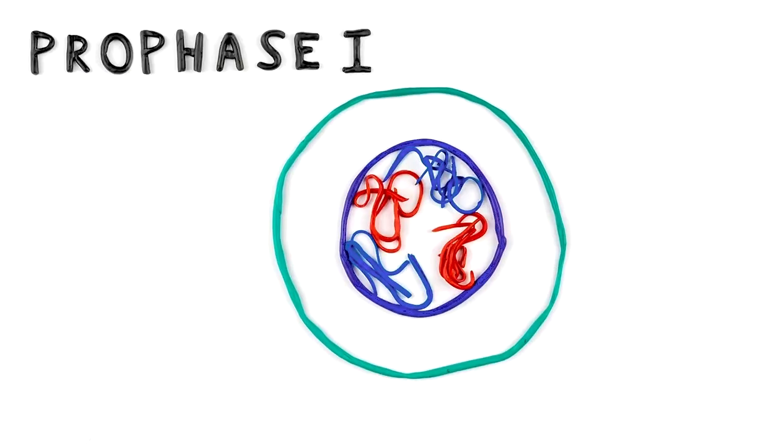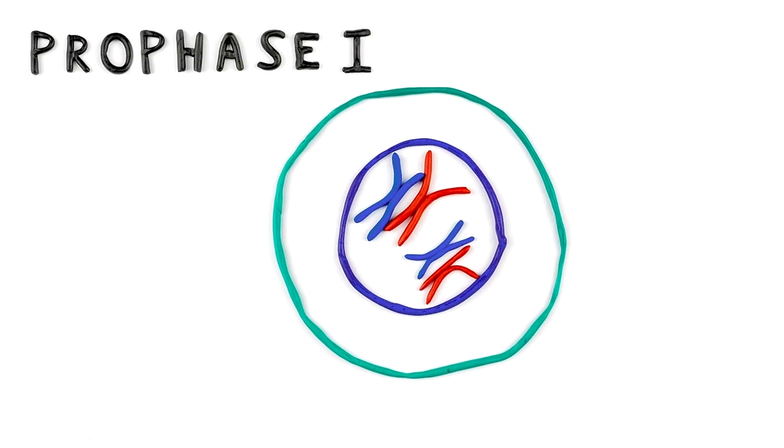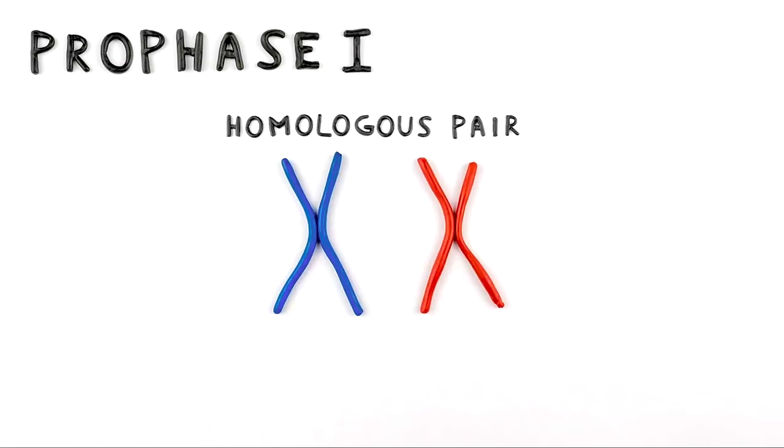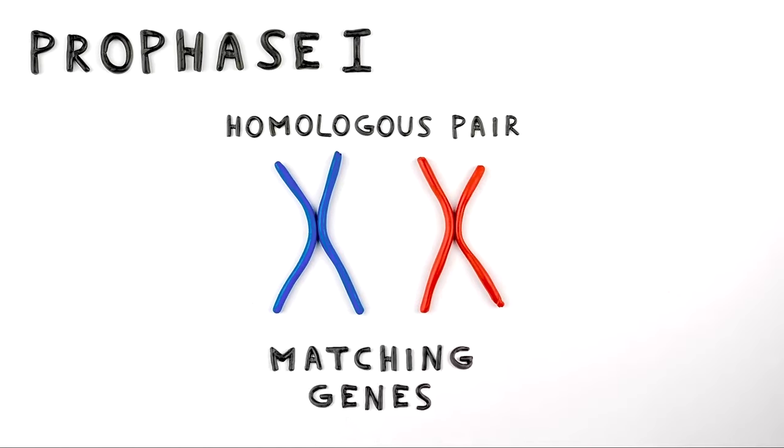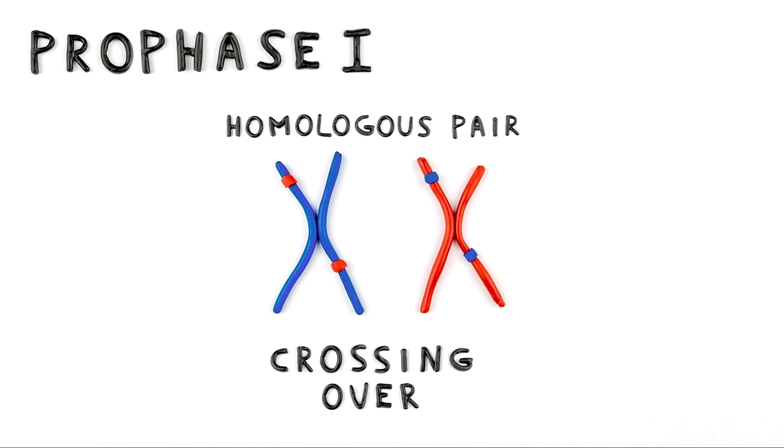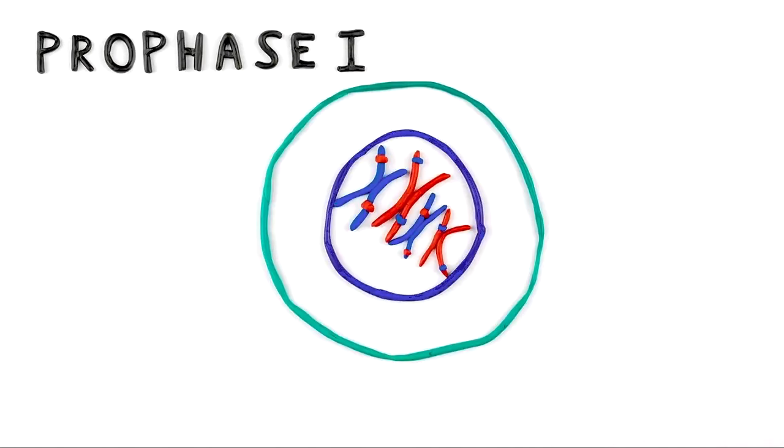In prophase I, the chromosomes condense and join together in homologous pairs. Each pair contains one chromosome from the father and one from the mother, with different copies of the same genes. Genes are swapped within each pair in a process called crossing over. The nucleus begins to break down.